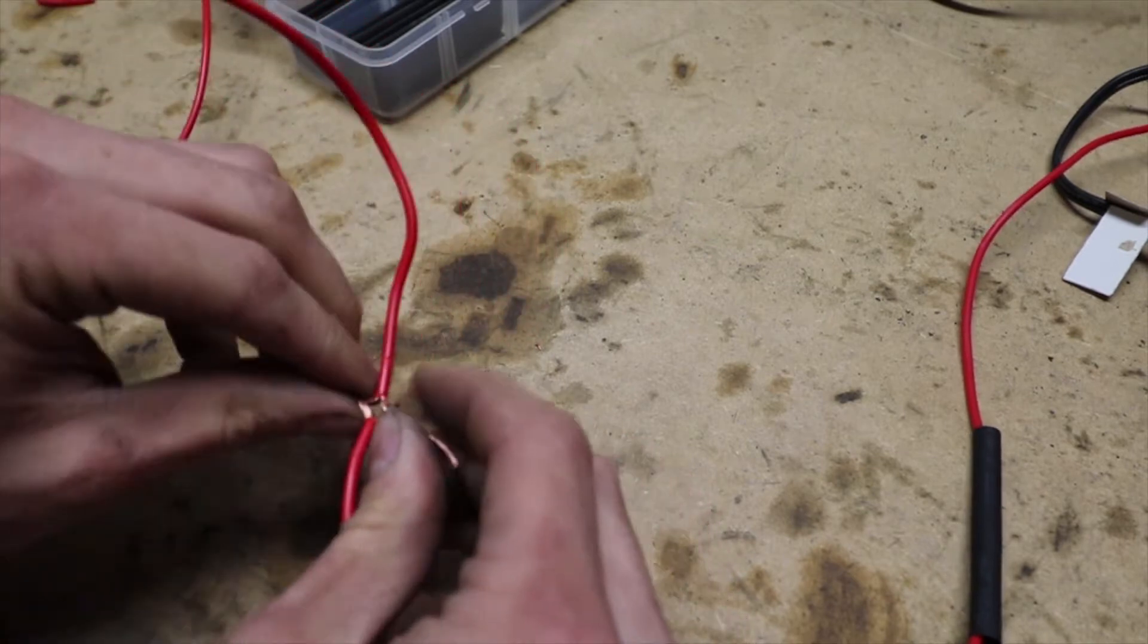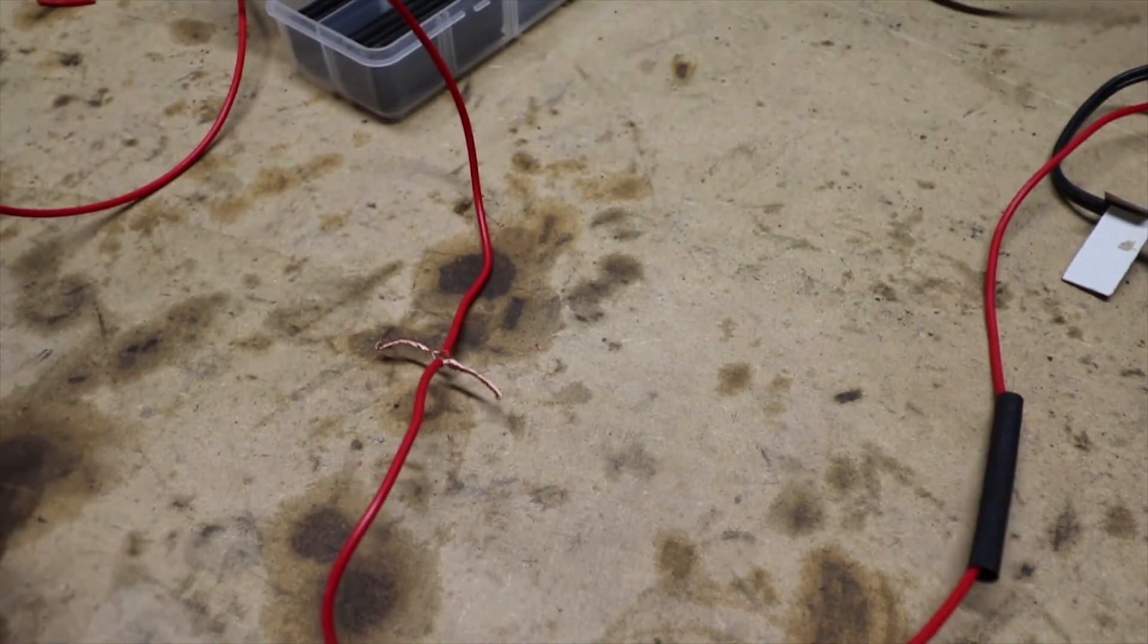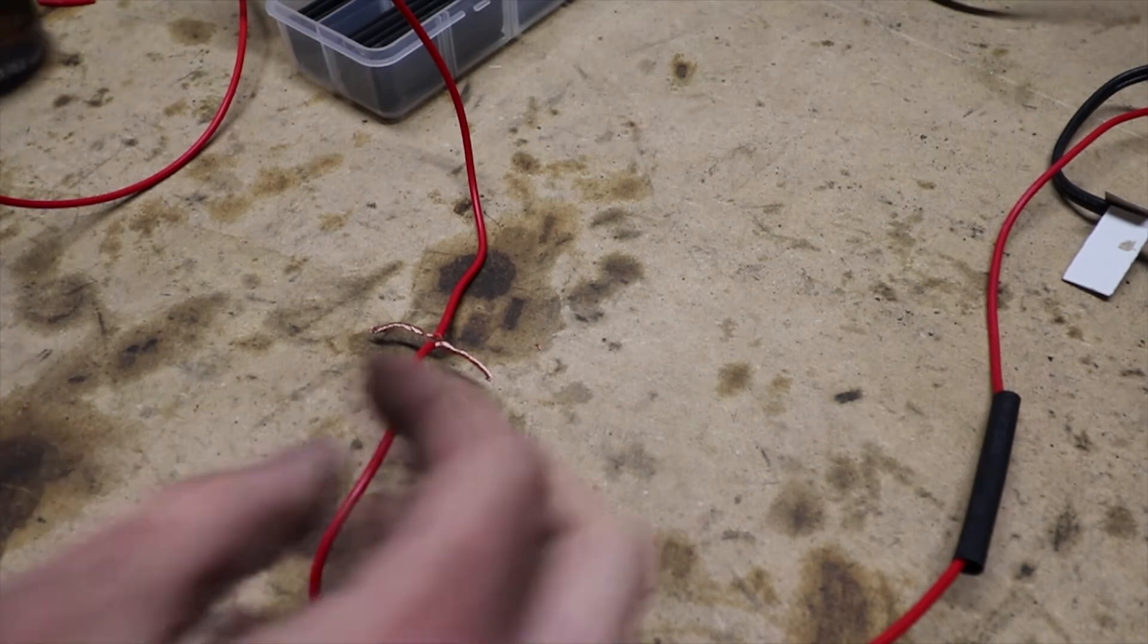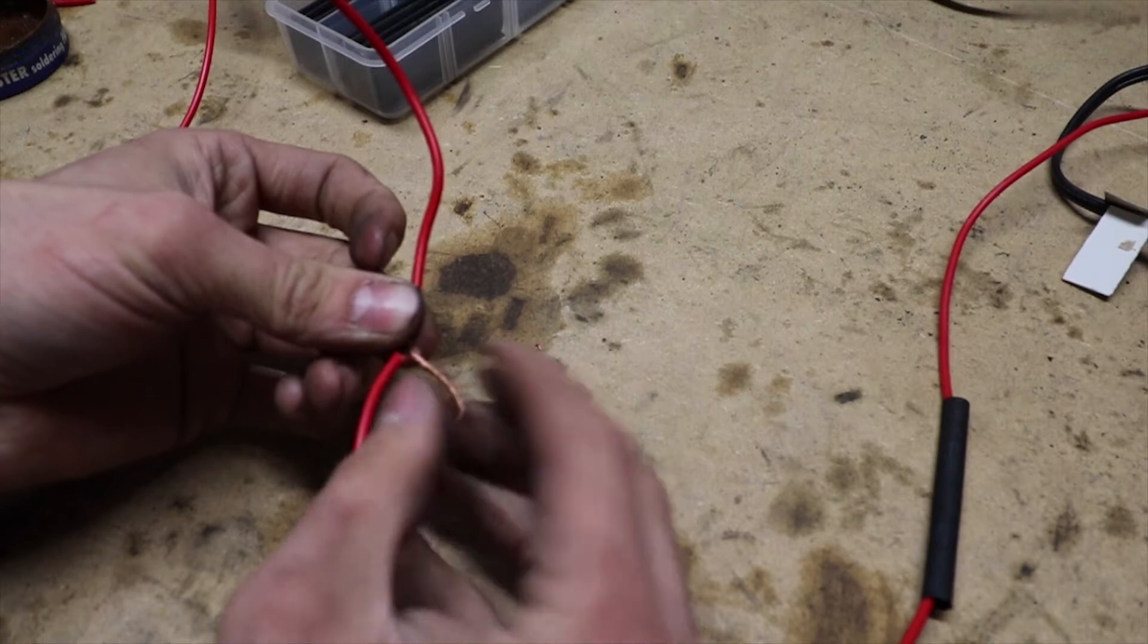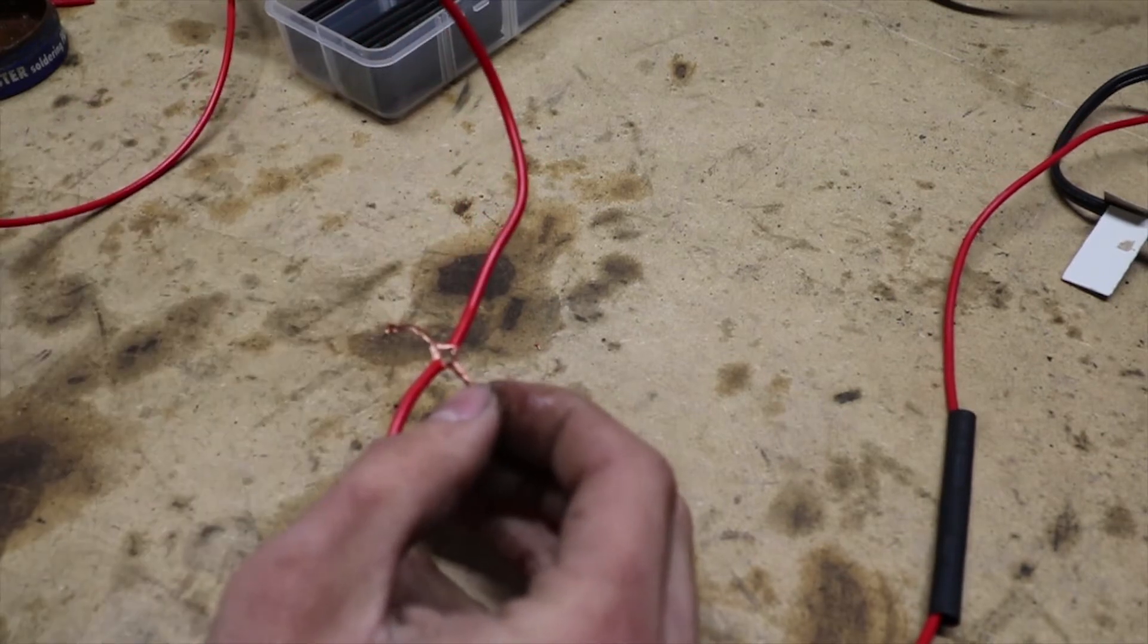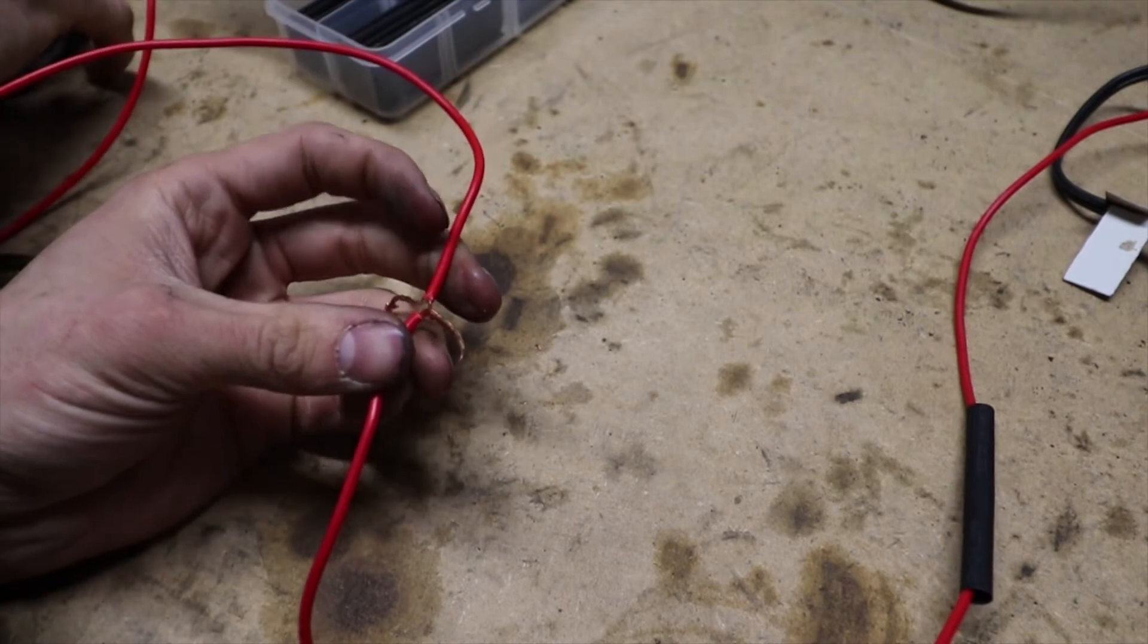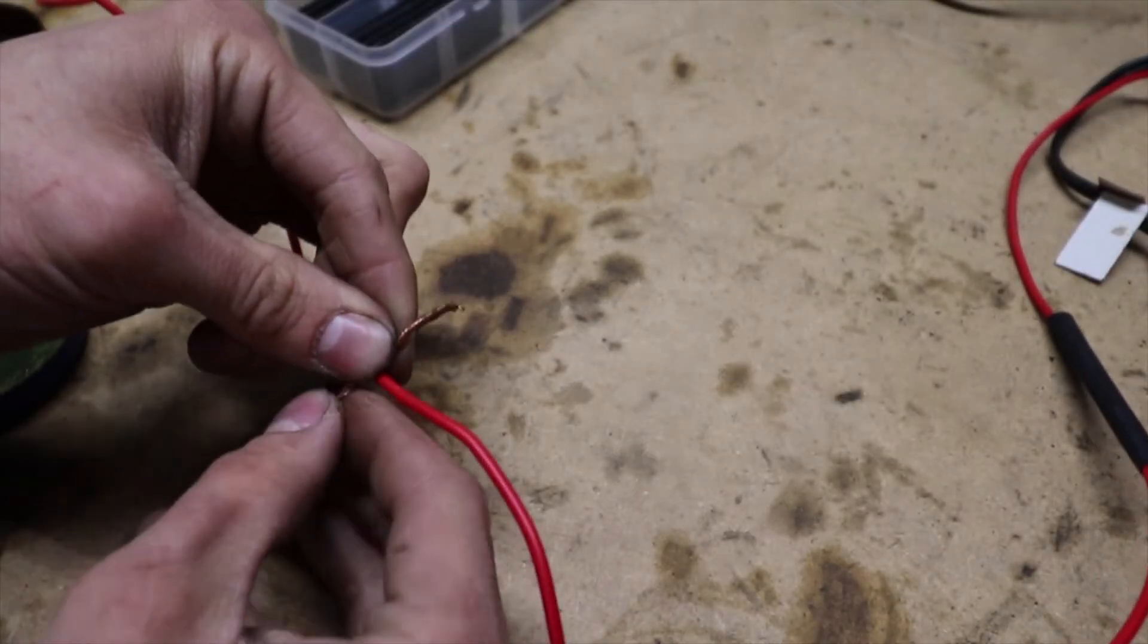Alright, now that you have that together, I like to use a little bit of soldering paste to help you. It helps with getting the solder to soak into the copper a little bit easier. Makes the whole soldering process a lot more enjoyable.